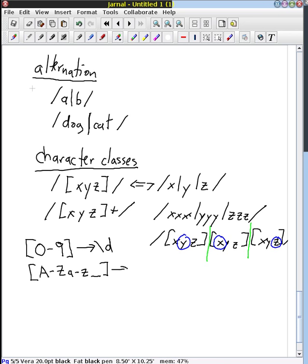And that is shorthand with backslash w for a word or a wordy character. And the reason for the underscore is because these right here represent characters that you would see in a variable name, for instance.